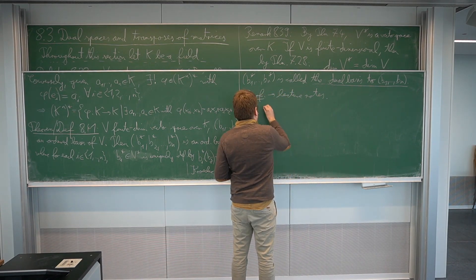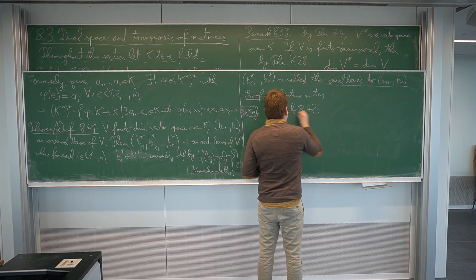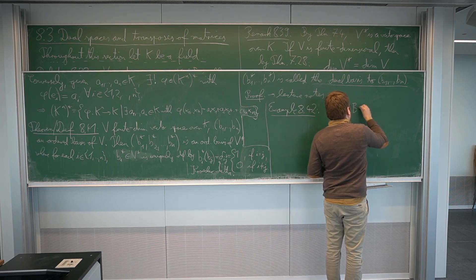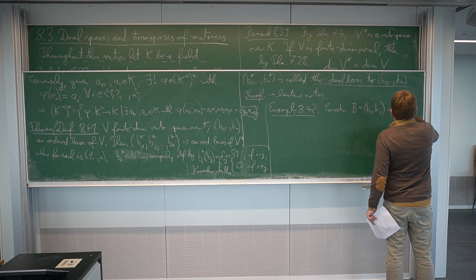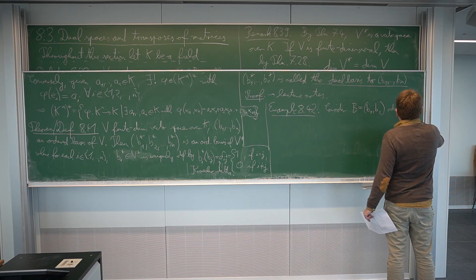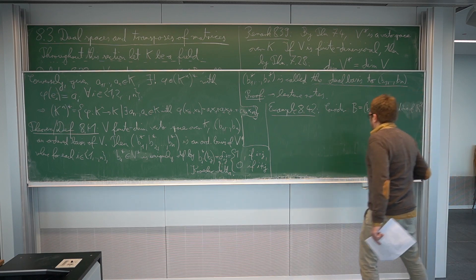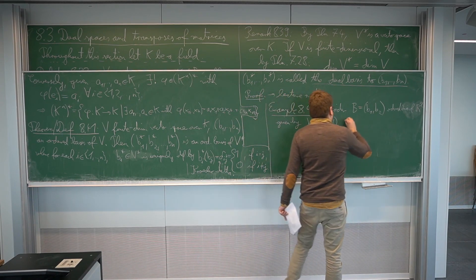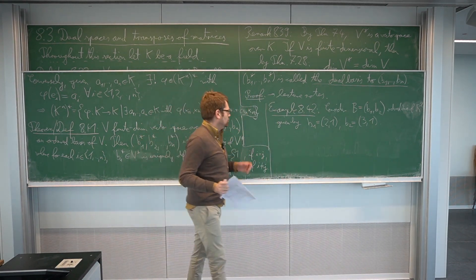That's a bit abstract. So let us do an example. Example 842. Let's take our favorite field, let's take the real numbers, consider the basis of R2. B, consisting of B1, B2, an ordered basis of R2. Have the simplest non-trivial vector space. And I want the following given by B1 is supposed to be the vector 2,1 and B2 is supposed to be the vector 3,1. It's quite easy to see that they are linearly independent, so that they form then the basis.